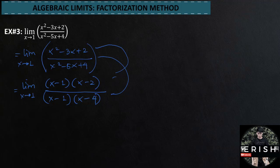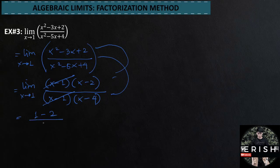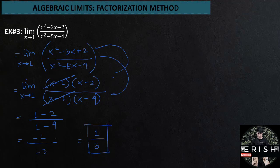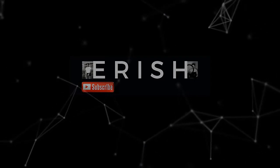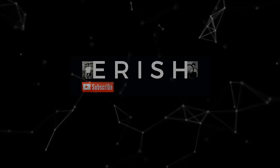In the factorization method, if we cannot cancel anything, that means we need to use a different method. After factorizing, we cancel the x minus 1 terms and substitute the value 1: this is 1 minus 2 over 1 minus 4. 1 minus 2 is negative 1, and 1 minus 4 is negative 3. Our final value for example number 3 is positive 1 over 3, since negative over negative is positive.